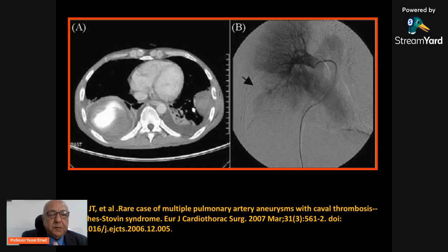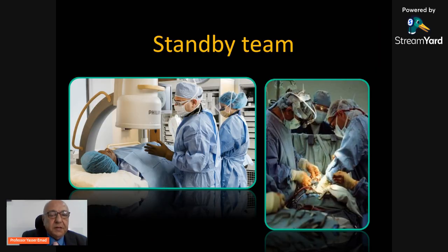Sometimes we perform pulmonary artery coil embolization — for example, in this patient with a pseudo pulmonary artery aneurysm. However, coil embolization is not always applicable to all types of pulmonary artery aneurysm, as some cannot be accessed this way. Therefore, we must have a standby team — usually cardiac surgeons and interventional radiologists — who have studied the case well and are ready to intervene at any time if there is worsening or increased frequency or severity of hemoptysis attacks.